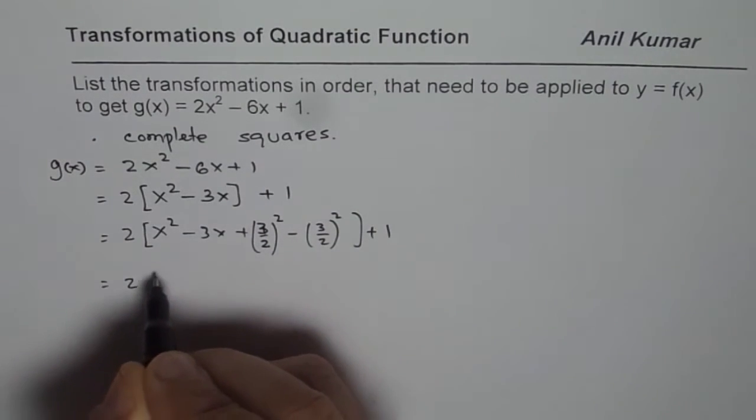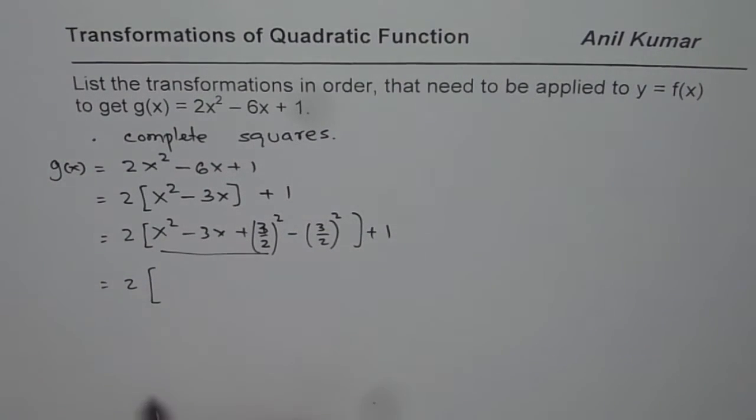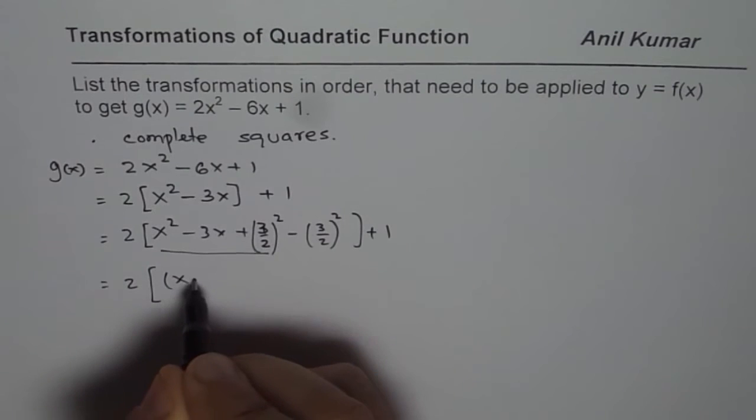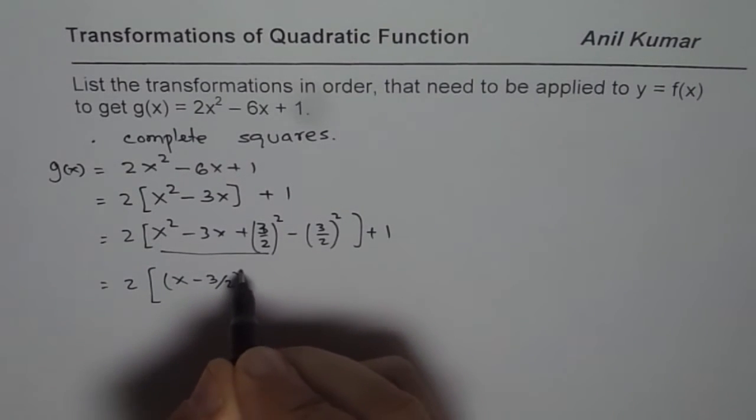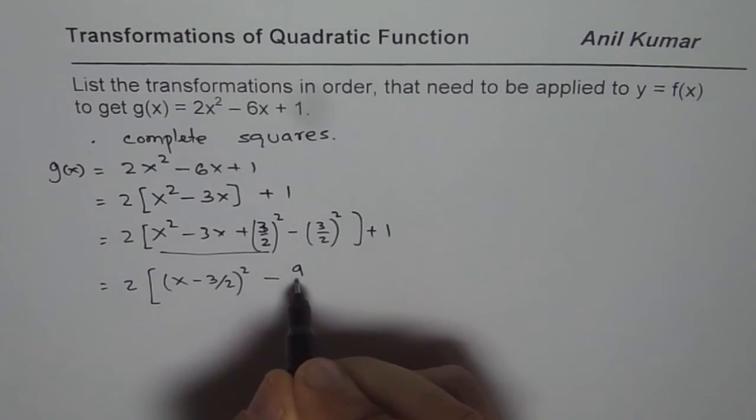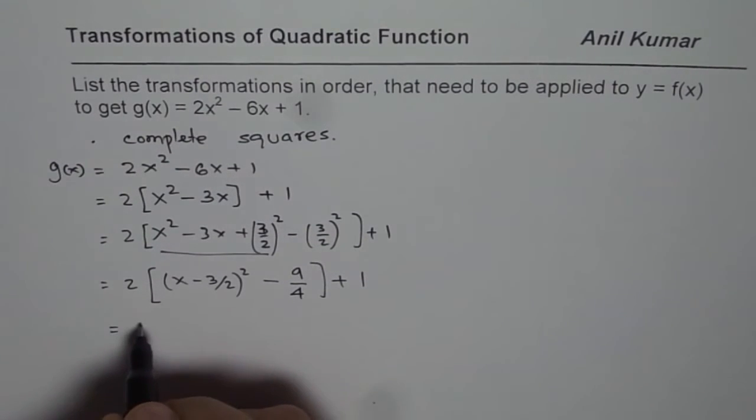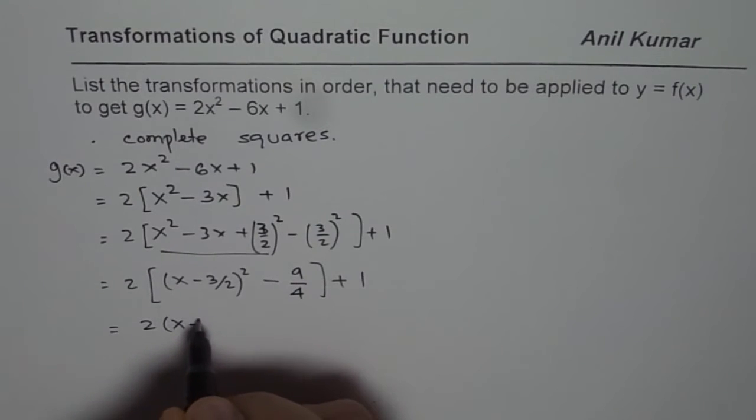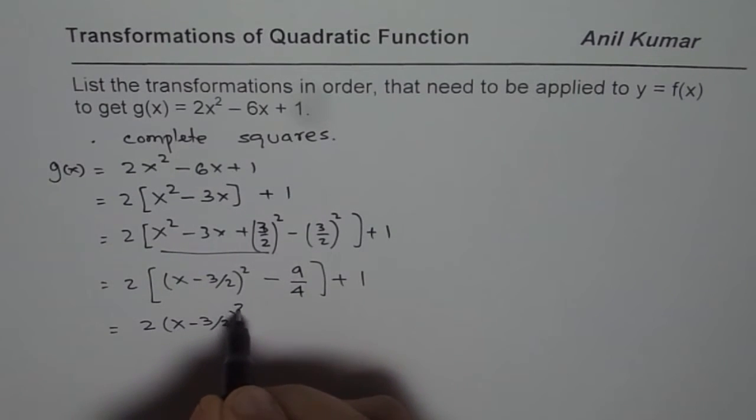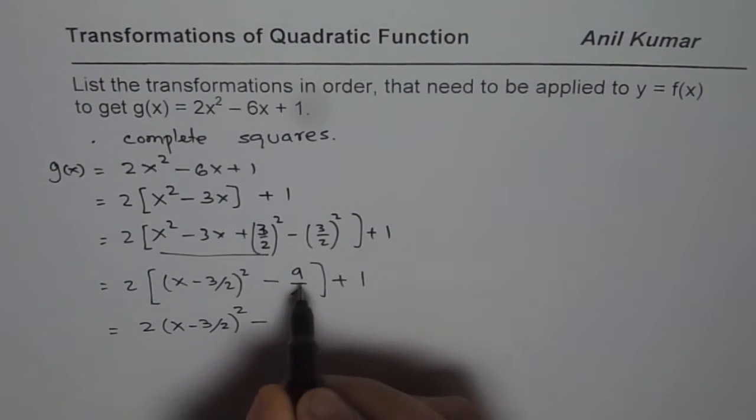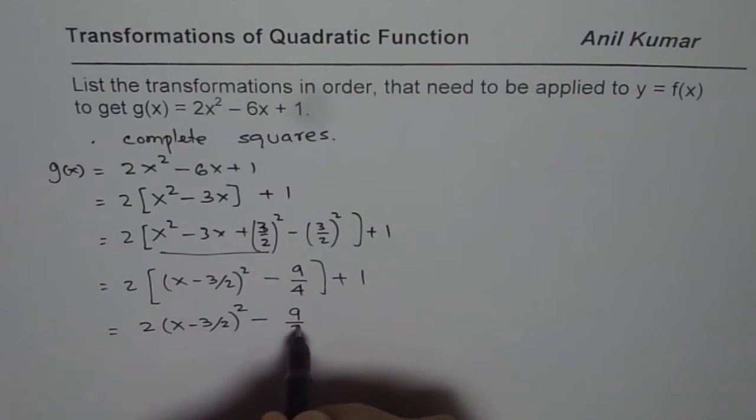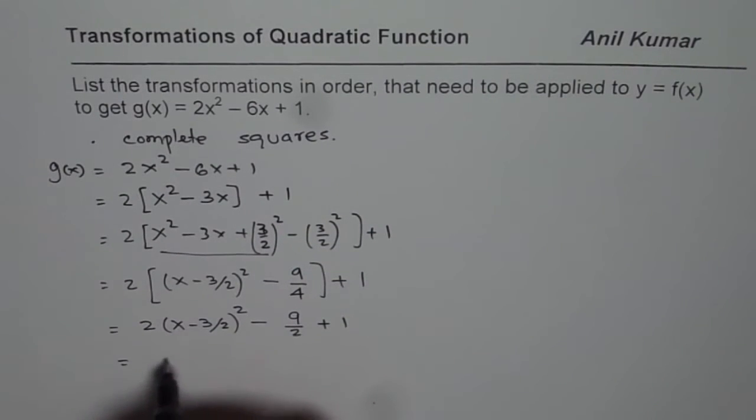As you know, the first three terms form the perfect square which is x minus 3 over 2 whole square, and then we have minus 9 over 4 plus 1. Now open the bracket. So you get 2 times x minus 3 over 2 whole square minus 9 over 2 plus 1. Now you can combine these terms.